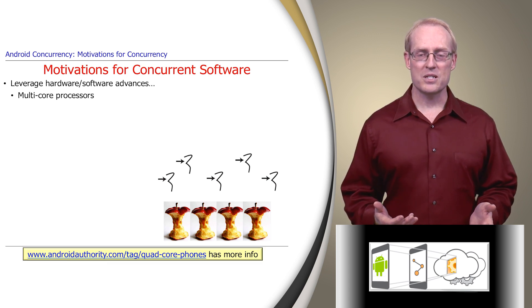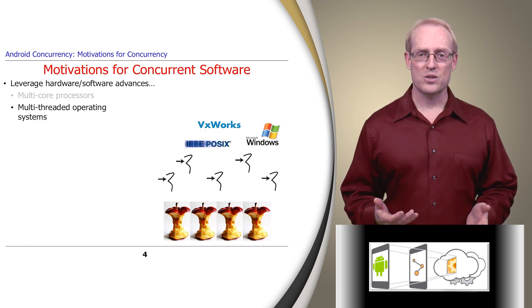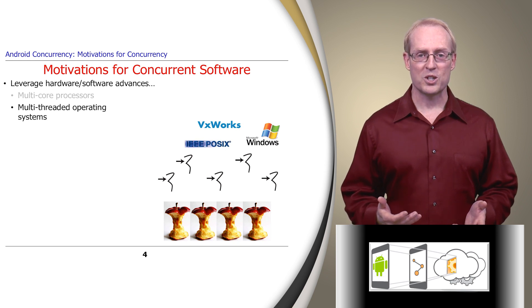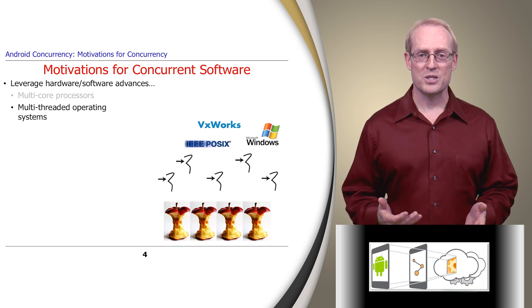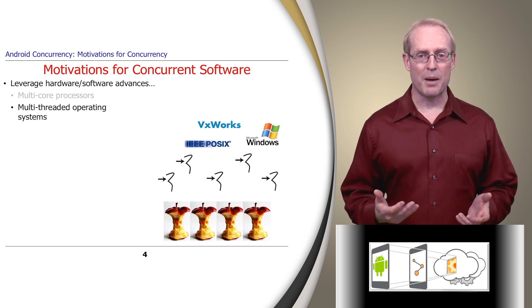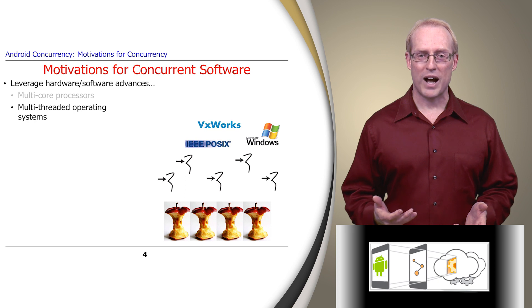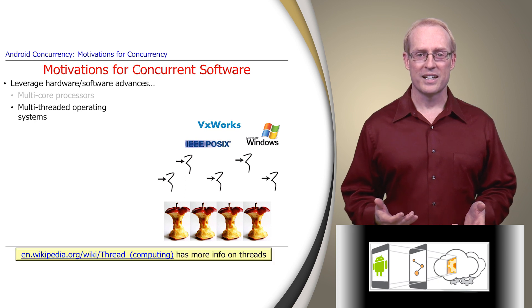Operating systems like Unix, Windows, and VxWorks are optimized to exploit these multiple cores efficiently via threads, which are the smallest sequence of programming instructions that can be managed independently by an operating system scheduler, as described at this link.